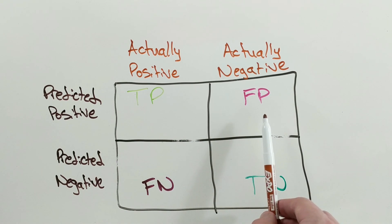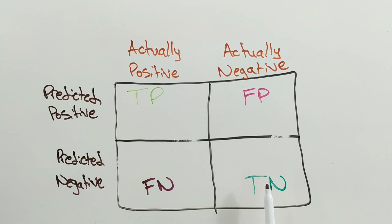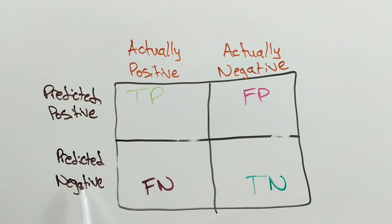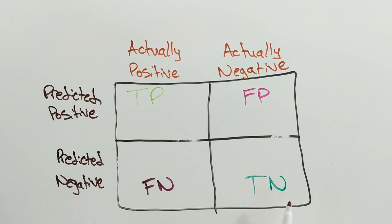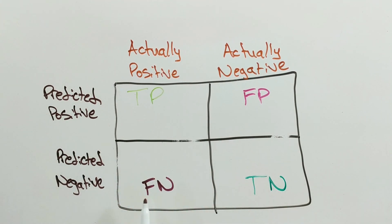The number of false positives. Quickly going through the rest of the boxes — the top left and bottom right are simple. Top left is where you predicted positive and it was positive, i.e., the true positive square. Bottom right is where you predicted negative and it was negative, so that's the true negative square. Finally, the bottom left is where you predicted negative but it was actually a positive, so that's the false negative square.